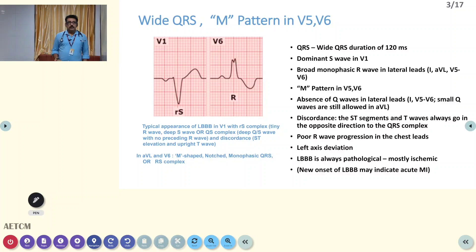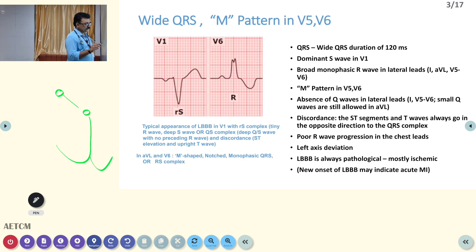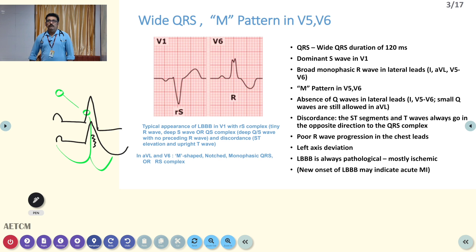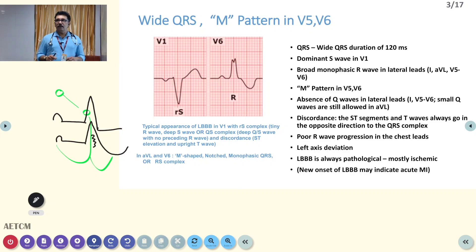Whenever there is a bundle branch block, normally SA node to AV node conduction happens, then AV node to bundle conduction happens. This produces the P wave and QRS complex. Whenever there is a conduction defect, the PR interval is normal, but conduction of the ventricle will be slightly delayed. Whether it is RBBB or LBBB, the conduction will be delayed, so the QRS complex is wider than 120 milliseconds — that is more than 3 small squares.